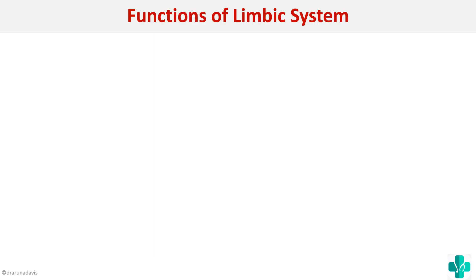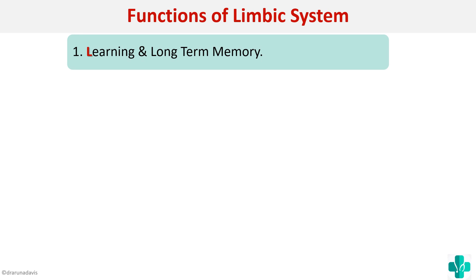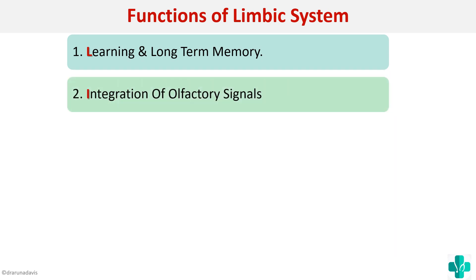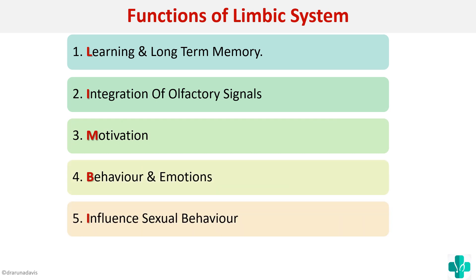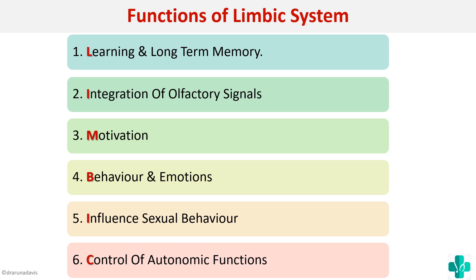The functions of the limbic system can be remembered by the mnemonic LIMBIC: Learning and long-term memory, Integration of olfactory signals, Motivation, Behavior and emotions, Influence on sexual behavior, and Control of autonomic functions. We'll see each one by one.